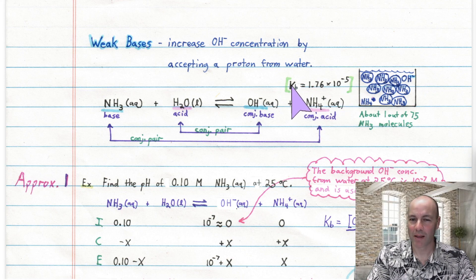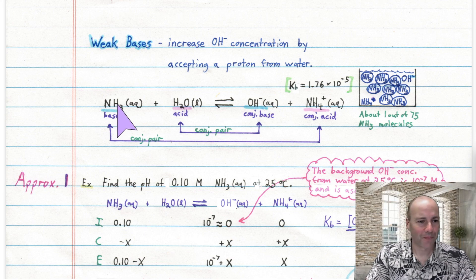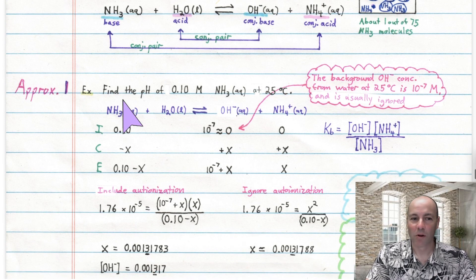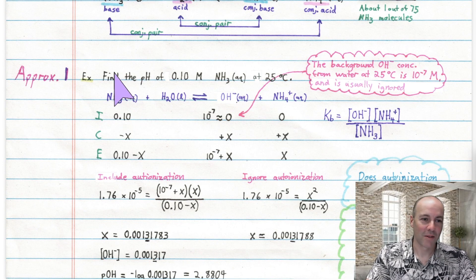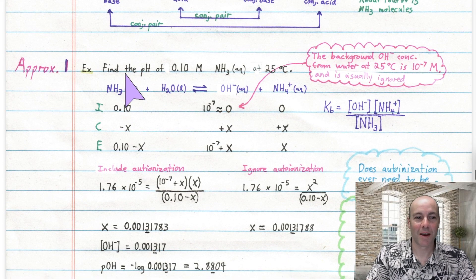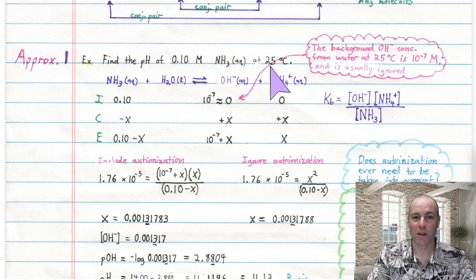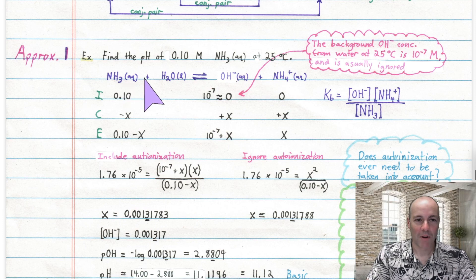Let's find the pH of an ammonia solution — it's a little more involved than a strong base. For a weak base, you're going to have to do an ICE diagram. For example, find the pH of 0.1 molarity ammonia at 25°C. Ammonia establishes this equilibrium in aqueous solution.